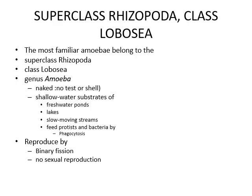Superclass Rhizopoda, Class Lobosia: the most familiar amoeba belong to this class. They possess lobopodia and the genus Amoeba is naked, meaning it has no shell. They live in shallow fresh water — ponds, lakes, and slow-moving streams — and feed on protists and bacteria by phagocytosis, engulfing large amounts of food. They reproduce by binary fission and have no sexual reproduction.